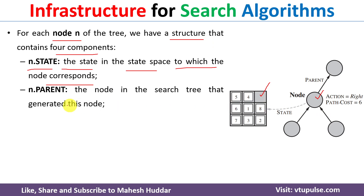The second component is n.parent. n.parent is the parent of this node from which the node is generated. For example, let's assume that this is a parent — to this particular parent we have applied some action and we have generated this node. So this parent will become the n.parent of the generated node.